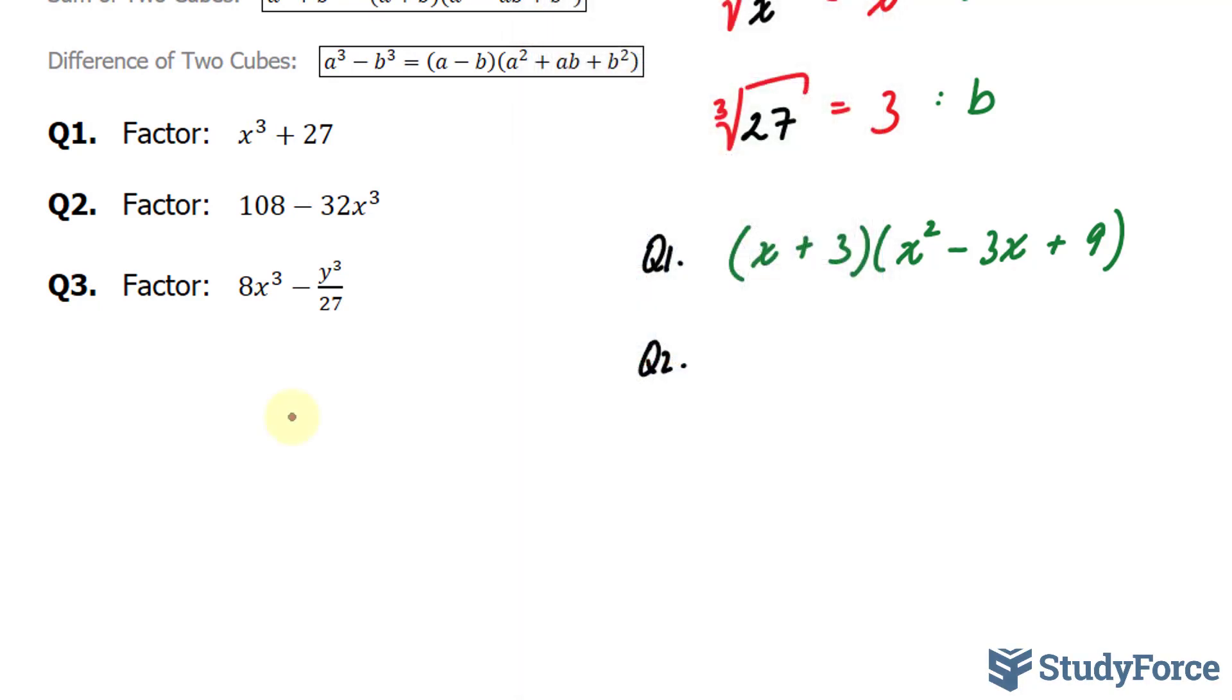So what you have to do in a situation like this is see if you can common factor anything from both of these terms. And it turns out that you can common factor something. In fact, if I factor out a 4 from both of these terms, I end up with 27 minus 8x to the power of 3.